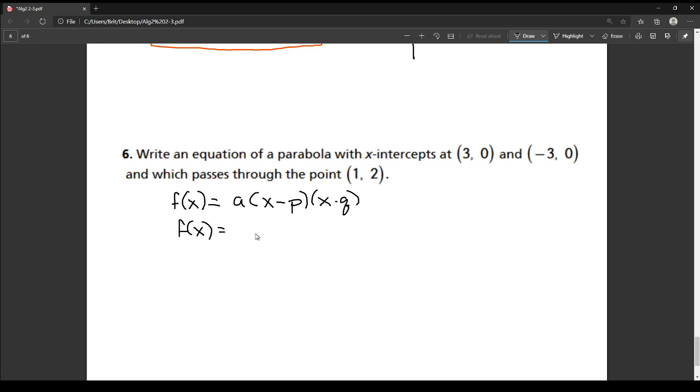So what I'm going to do is I'm going to plug in my 3 and my negative 3 to make my zeros. So remember I just flipped their signs. So this one that's at 3 will turn into x minus 3. This one that's at negative 3 turns into x plus 3.